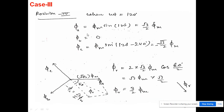In Case 3, ωt = 120°. phi_a = √3/2 * phi_max, phi_b = 0 (since sin(120°−120°) = sin(0) = 0), and phi_c = −√3/2 * phi_max. Phi_a is drawn in its positive direction, phi_b is zero so it contributes nothing, and phi_c is in the backward direction. Applying the parallelogram law again gives the same resultant magnitude of 3/2 * phi_max, and the direction has continued to rotate, confirming that the magnitude is constant.